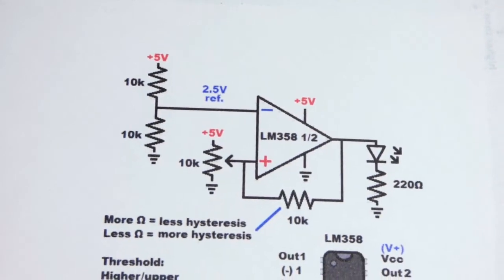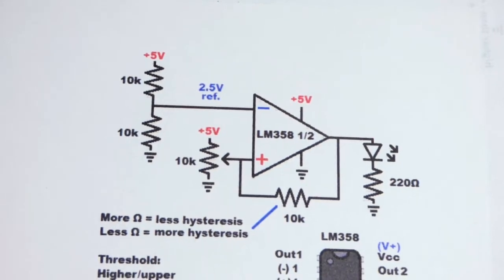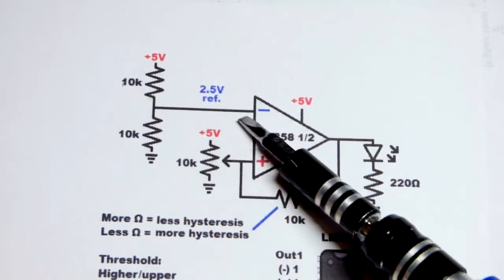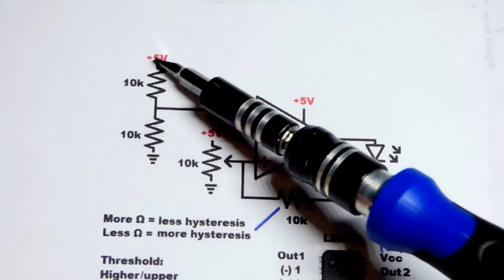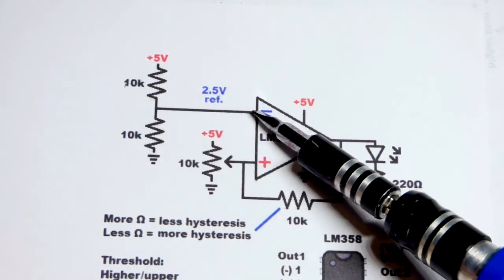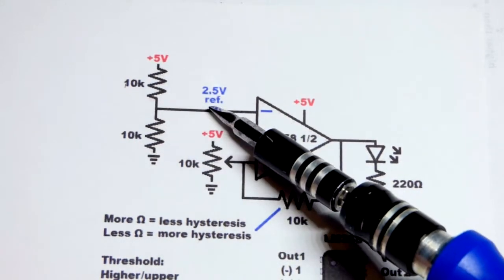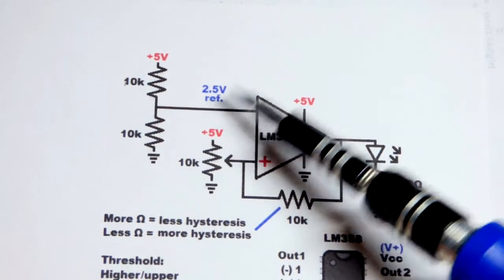And here is our schematic. So we have the fixed resistors there to the inverting input. Both of them were 10,000 ohm resistors, 10 kilohms. One to the positive supply, one to the negative. And so half of the resistance towards each side, we end up with half the resistance at the inverting input.